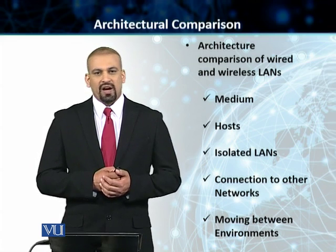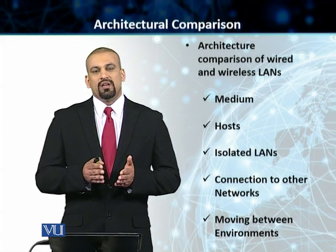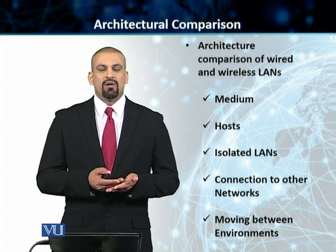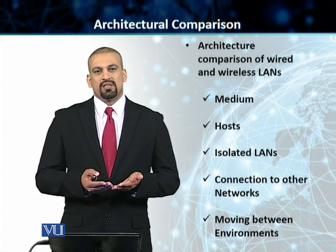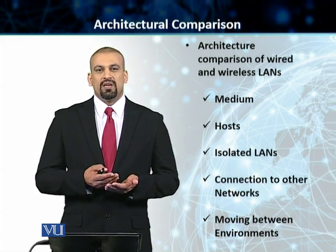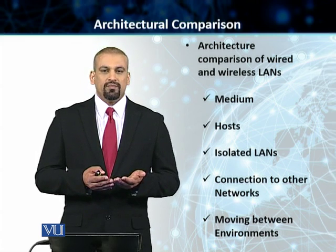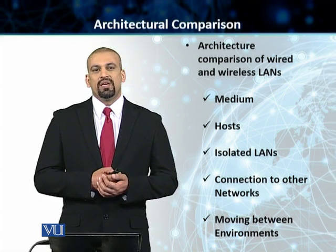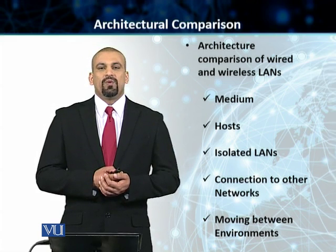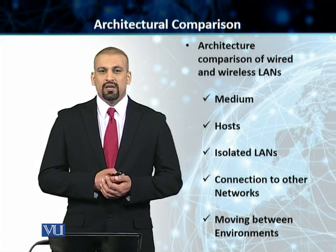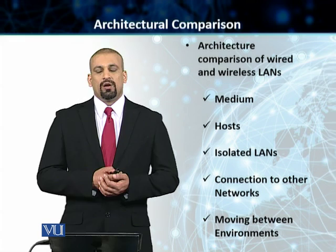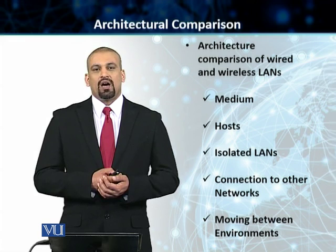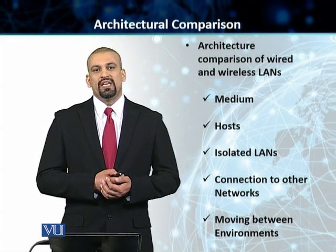In the case of wired LANs, we need cables. Our transmission medium consists of different cables — whether it's UTP, STP, twisted pair, coaxial cable, or fiber optic — the medium is wired. We use different techniques because of that wired nature of the local area networks. In the case of wireless, our medium is only air.